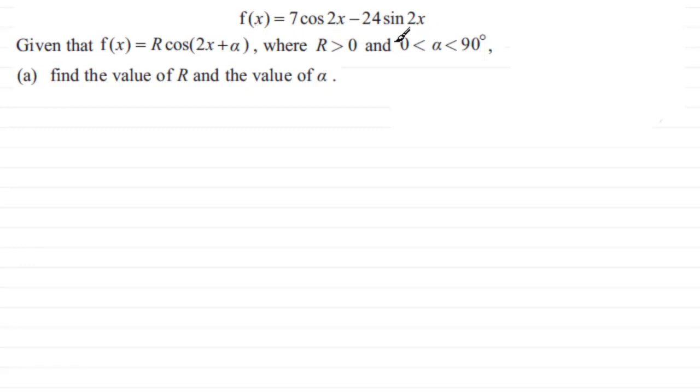and alpha is an angle which is greater than 0 degrees but less than 90 degrees. We've got to find the value of R and the value of alpha. If you haven't given this question a go at the moment, just pause the video and give it a try and you can come back and check your solution with mine.